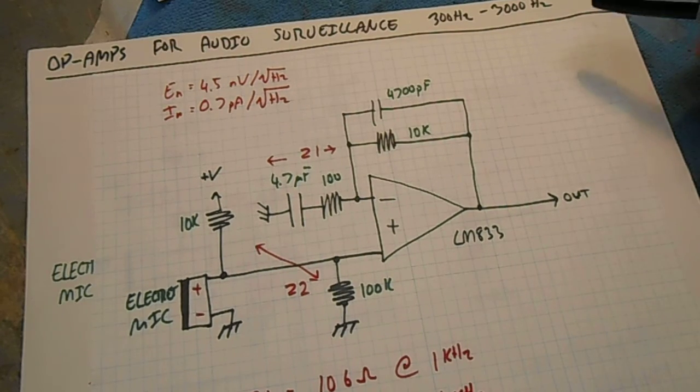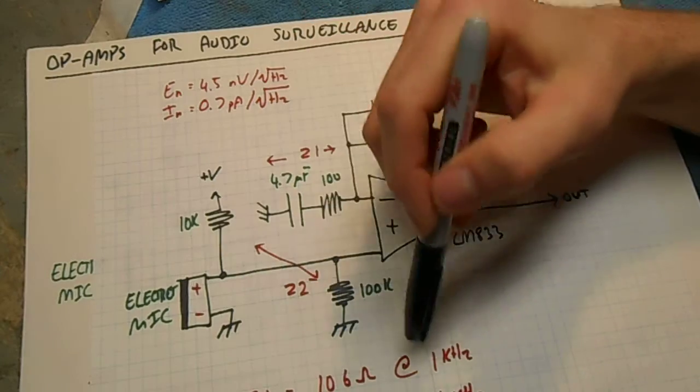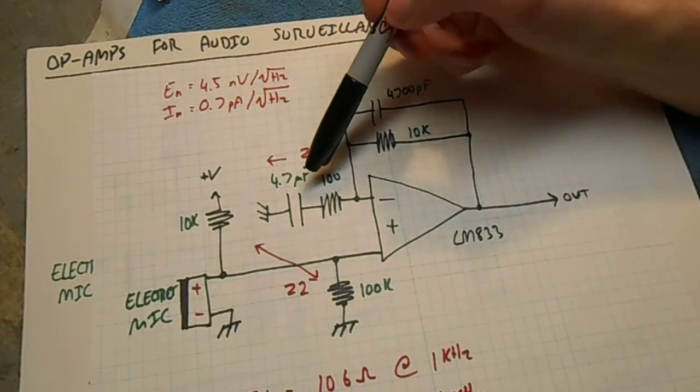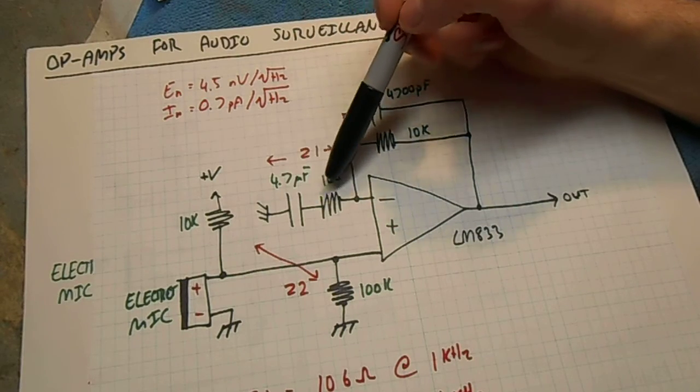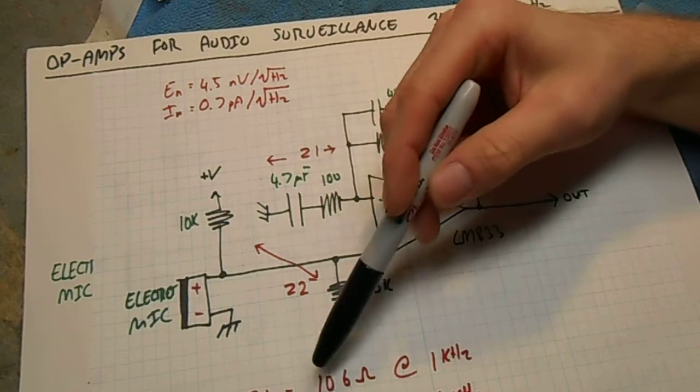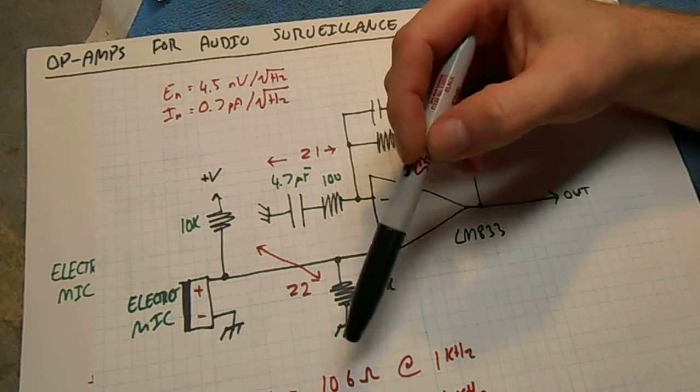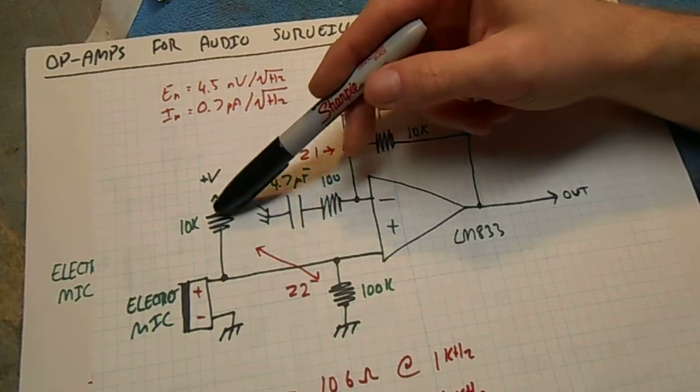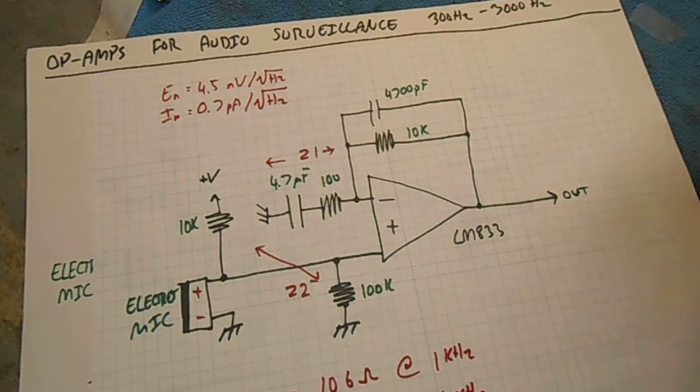Now we need to determine the impedance of these two networks at 1 kHz. The 4.7 microfarad cap in series with the 100 ohm resistor is 106 ohms impedance at 1 kHz, and the two resistors in parallel are 9000 ohms at 1 kHz.